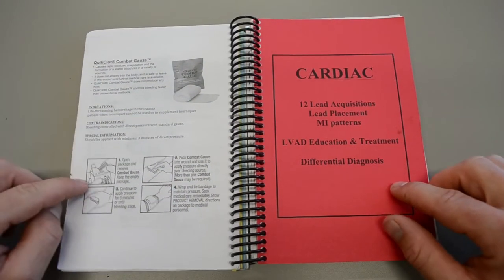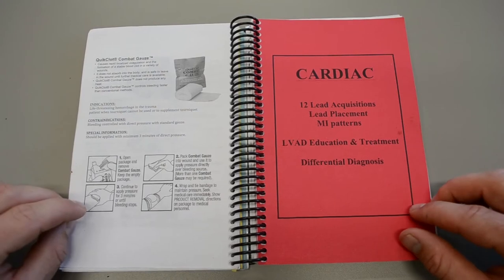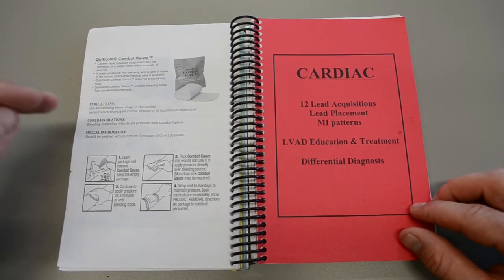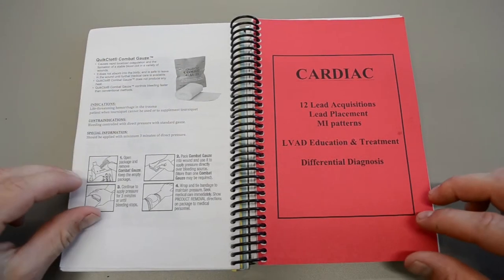And then over here we have our quick clot combat gauze. That is also a BLS level skill with the indications, contraindications, special info. Tells you a little bit about it.